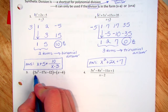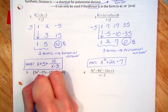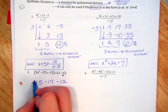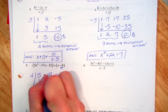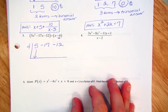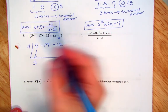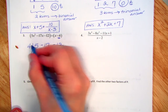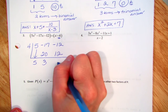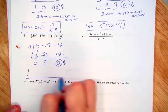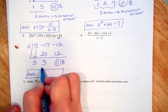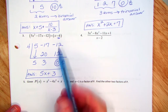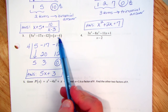The coefficients of the polynomial we're dividing are 5, negative 17, and negative 12. Since the divisor is x minus 4, we use 4 out front. Bring down the 5. 4 times 5 is 20. Negative 17 plus 20 is 3. 4 times 3 is 12. Adding, we get a remainder of 0. The answer is two terms, so it's a binomial: 5x plus 3. A remainder of 0 means that x minus 4 is a factor of this polynomial.